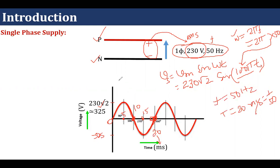Different countries have different ratings for single-phase supply. In the USA, it is 110 volts, 60 Hz. But most countries have a voltage rating of around 230 volts, 50 Hz. So this much you need to understand related to single-phase supply.